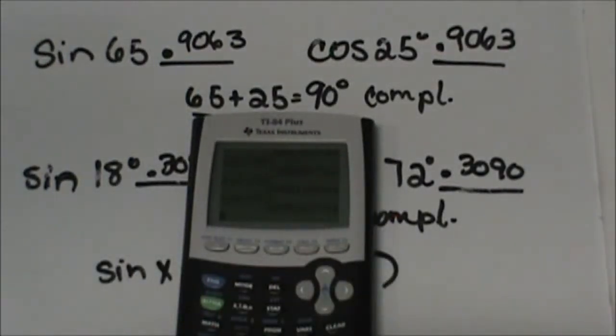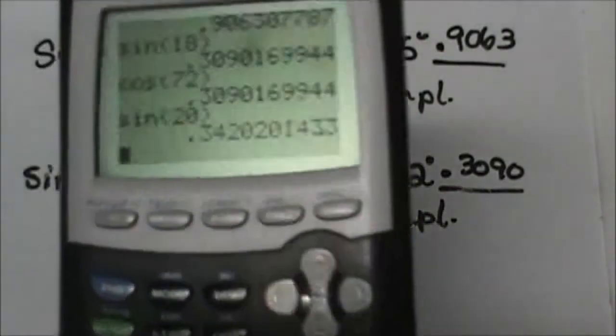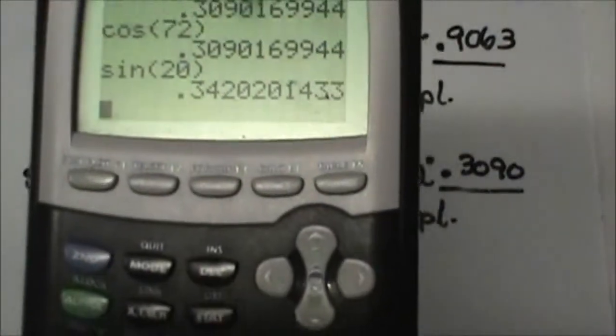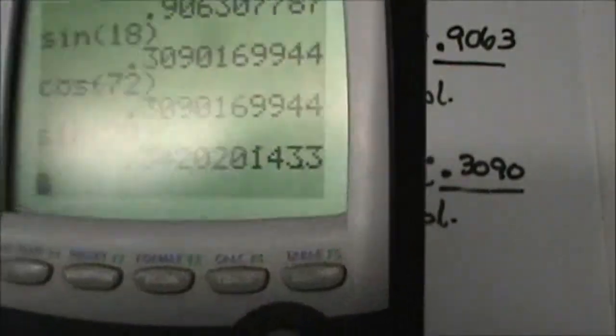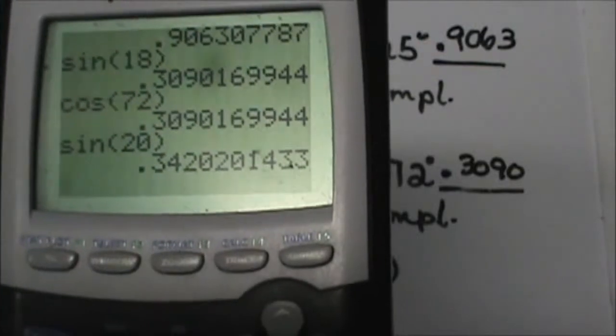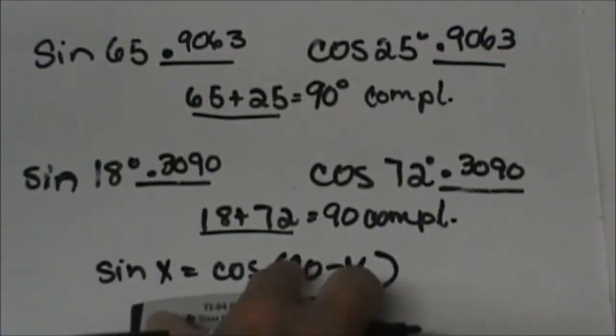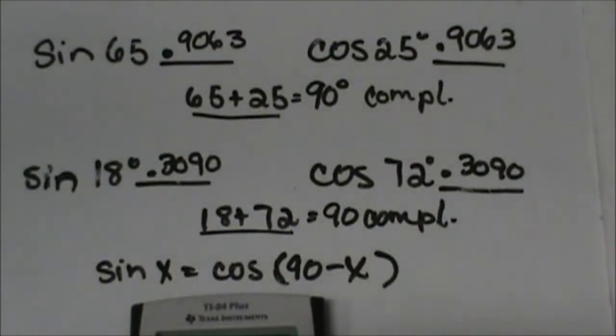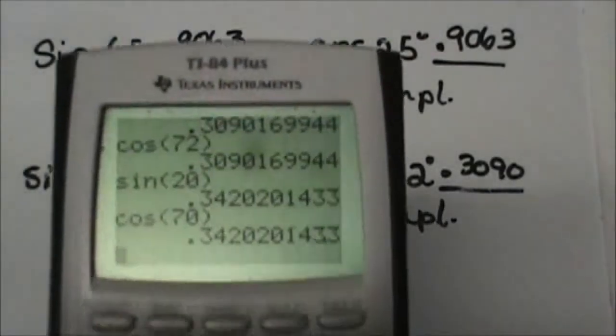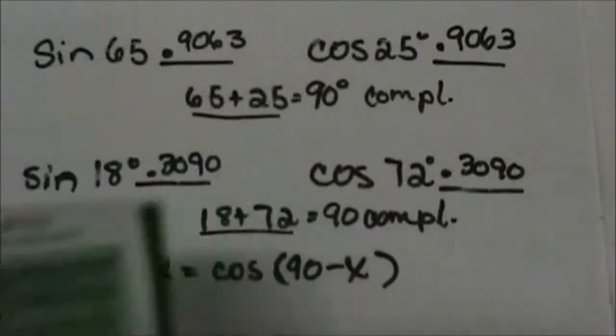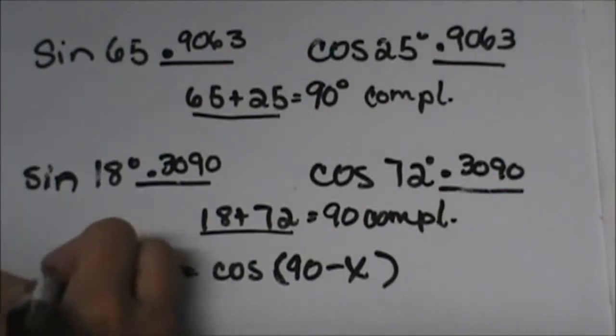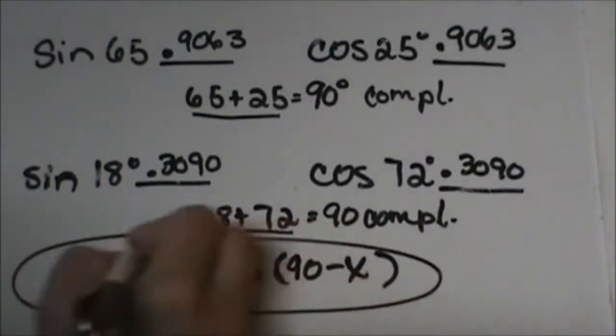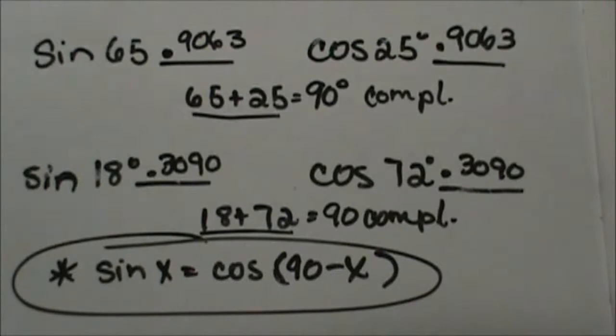So let's make up a number. Let's just say we're taking the sine of 20. In your calculator, take the sine of 20, and I'm getting 0.3420. Then 90 minus 20 would be 70, so the cosine of 70 is also that same value, 0.3420. So that is the rule right there.